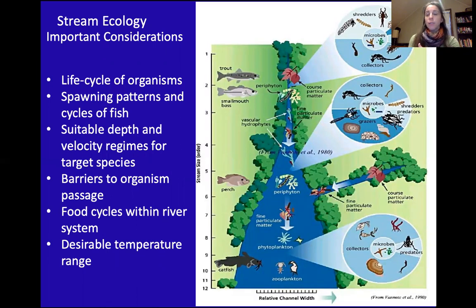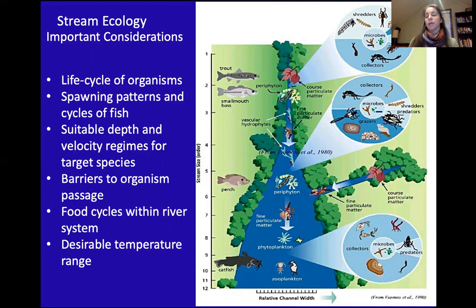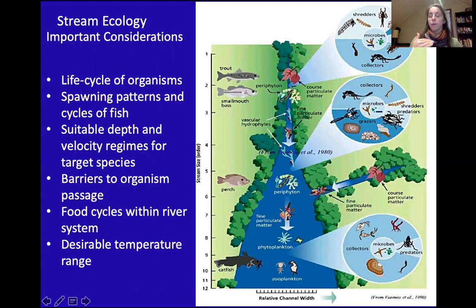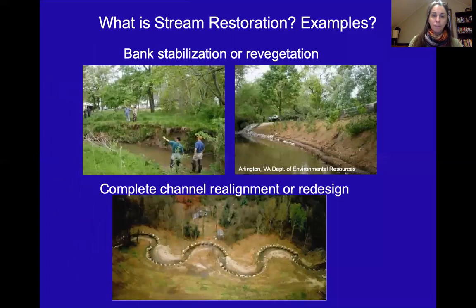When we look at stream ecology, important considerations include the life cycle of organisms, the spawning patterns and cycles of fish, suitable depth for different target species, barriers to organism passage upstream and downstream, food cycles within the river system, desirable temperature ranges, and the entire food web — not just fish but also organisms needed to support higher-level species.